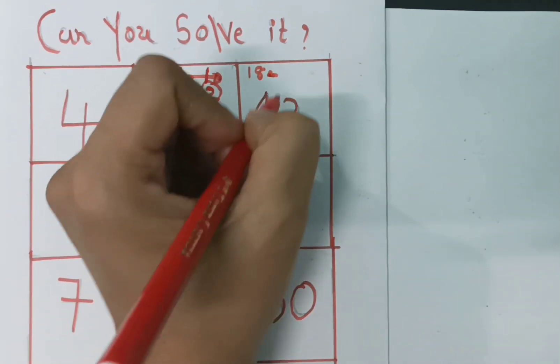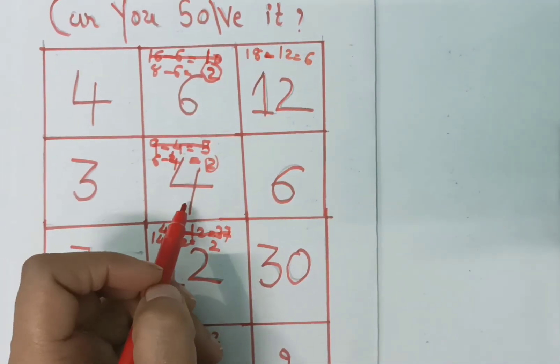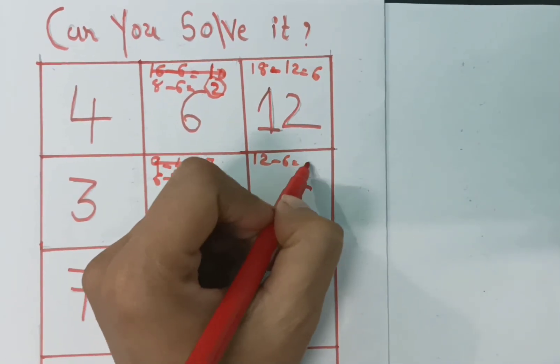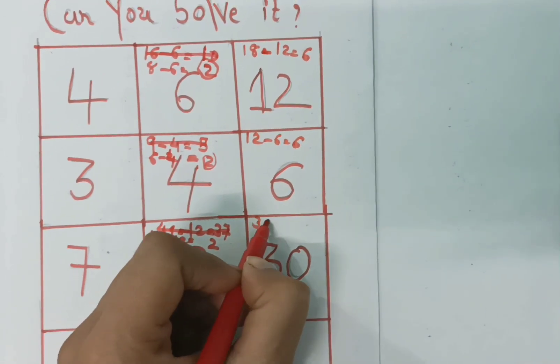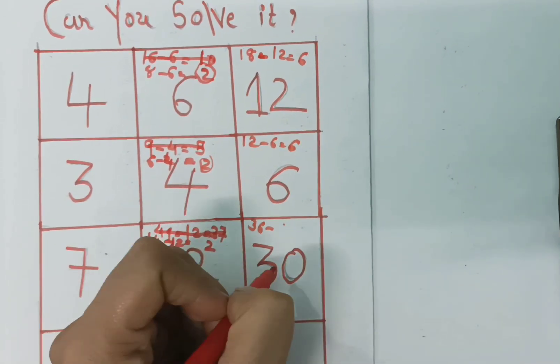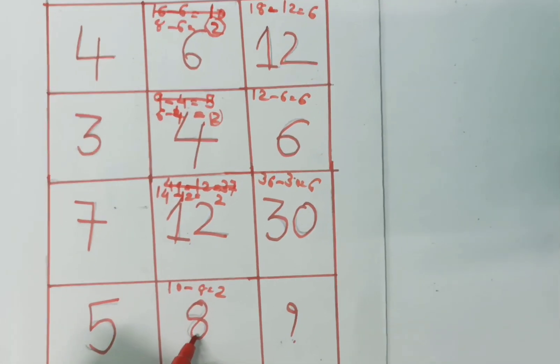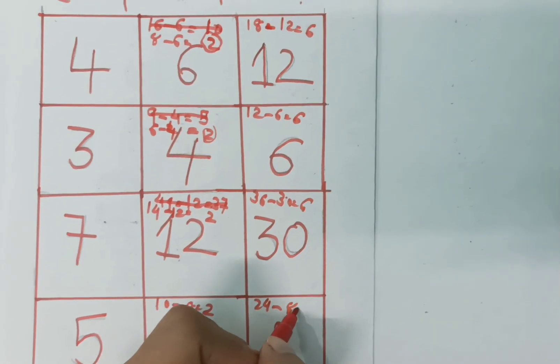6 times 3 is 18. 4 times 3 is 12, and minus 12, so we get zero. Here, 4 times 3 is 12, and minus 6, we get 6. Here, 4 times 3 is 12, and minus 8...